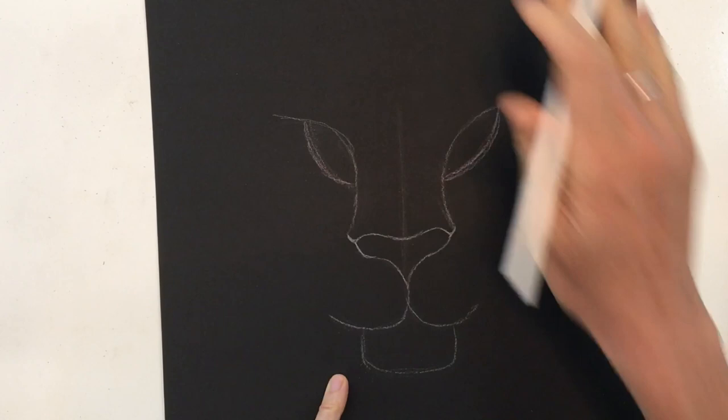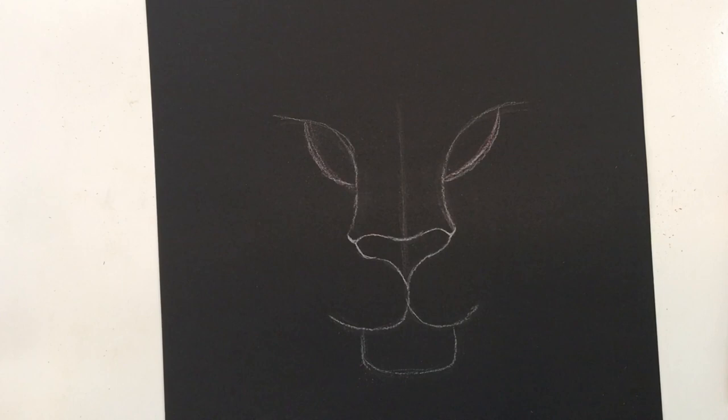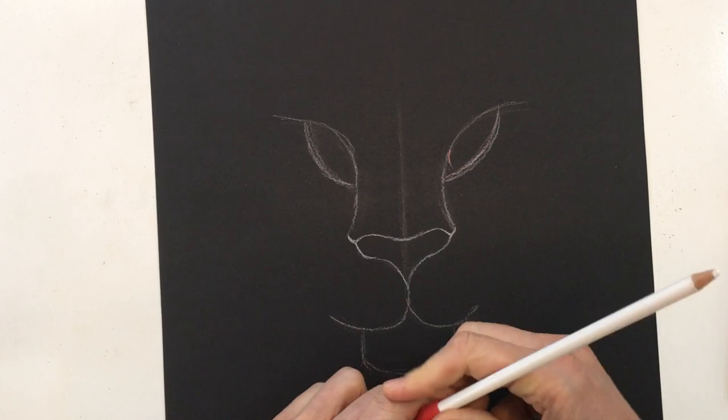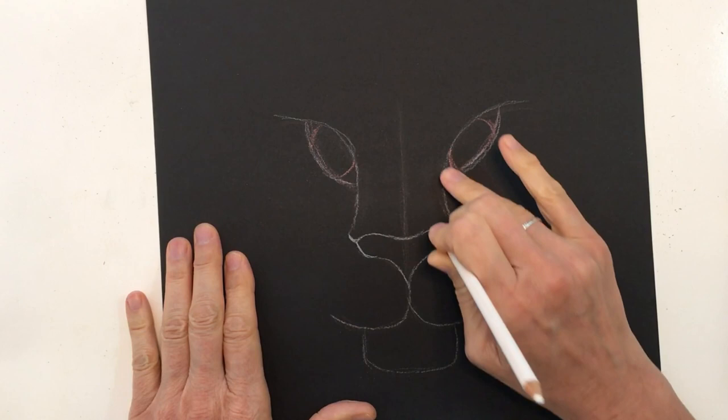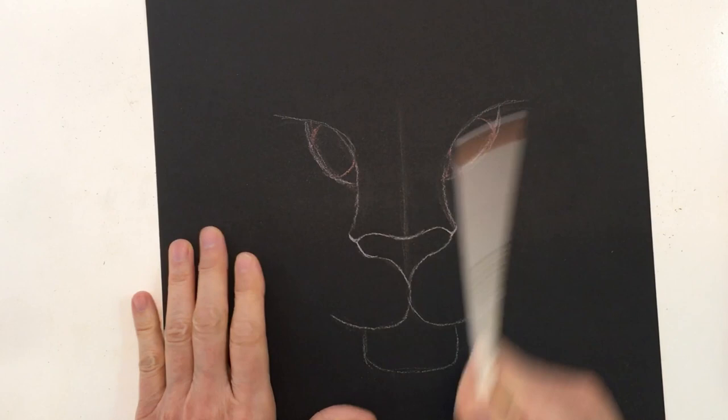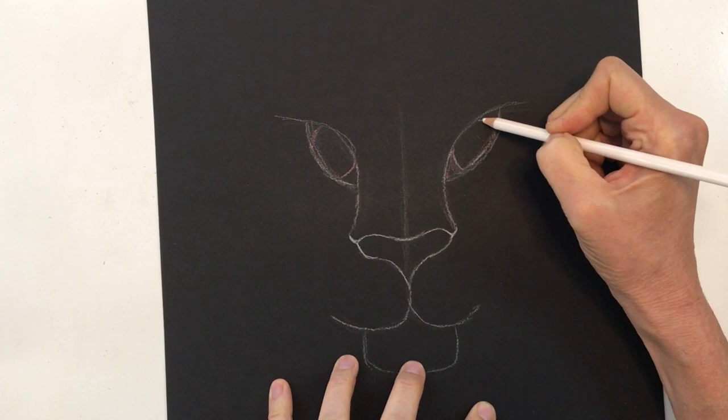For the eyes, put in a curve at the bottom and one at the top to form each eye, doing the same on both sides. Check for symmetry — if one looks a little low, make an adjustment. Once you're happy with them, trace over with your pencil.